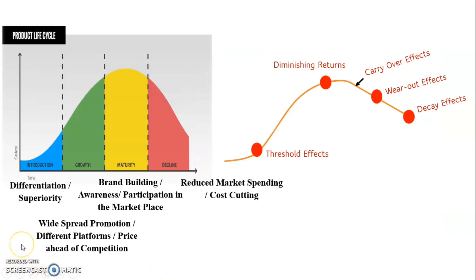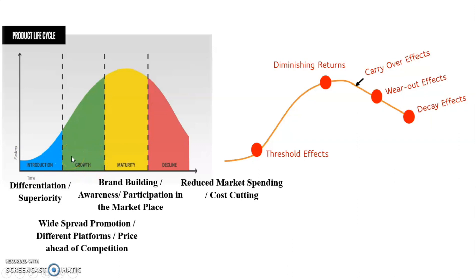For the final thought, I want you to pause this video and think about the product life cycle and how your advertisement will perform at each stage — introduction, growth, maturity, and decline. That is all for this lecture. We have discussed the various advertising appeals. In the next video, we will be talking about the various executional frameworks required to design these appeals.